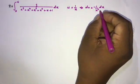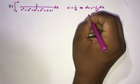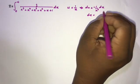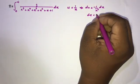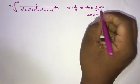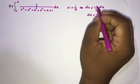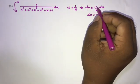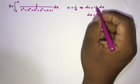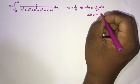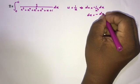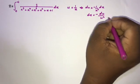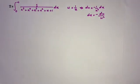We can isolate dx. So dx is equal to minus 1 over u squared du, giving us minus du over u squared.